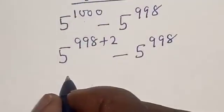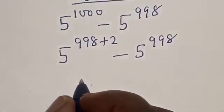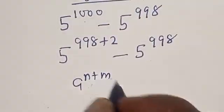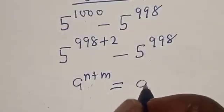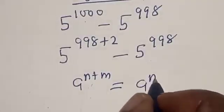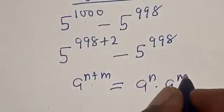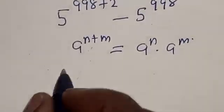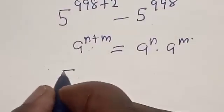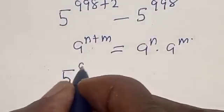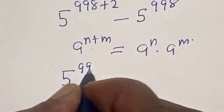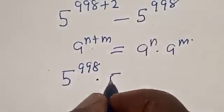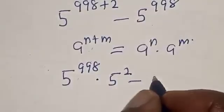Remember this rule: if you have a raised to power n plus m, this is equal to a raised to power n multiplied by a raised to power m. Now we have 5 raised to power 998 multiplied by 5 squared, minus 5 raised to power 998.